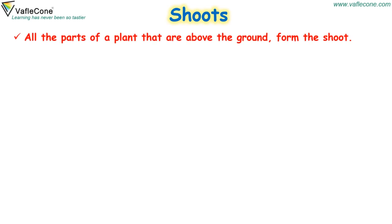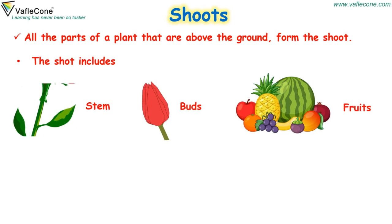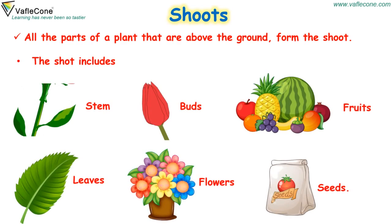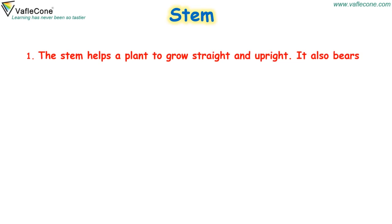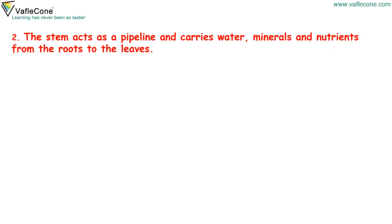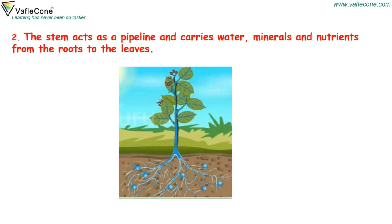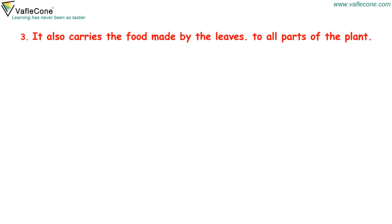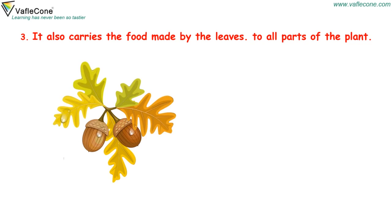Shoots: All the parts of a plant that are above the ground form the shoot. The shoot includes stem, buds, fruits, leaves, flowers and seeds. Stem: The stem helps a plant to grow straight and upright. It also bears leaves, flowers and fruits. The stem acts as a pipeline and carries water, minerals and nutrients from the roots to the leaves. It also carries the food made by the leaves to all the parts of the plant.